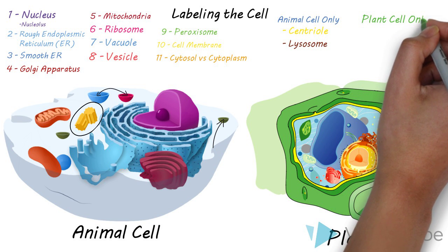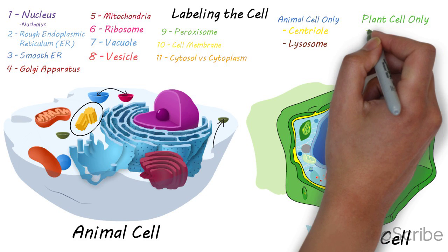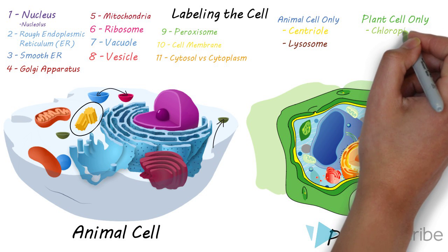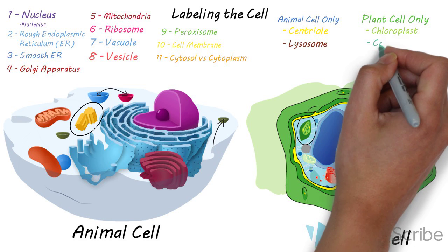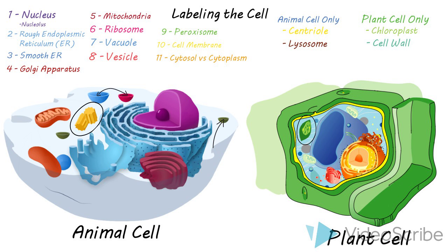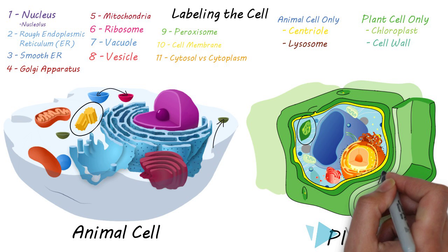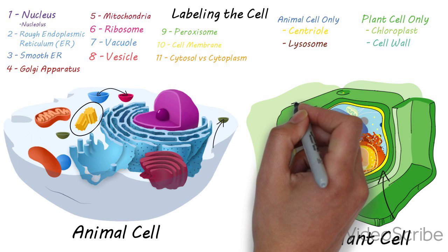In the plant cell only, we have chloroplasts. They usually are almost always green and they'll have layers inside them. And then the cell wall, that's this thick outer edge that's surrounding the cell membrane.